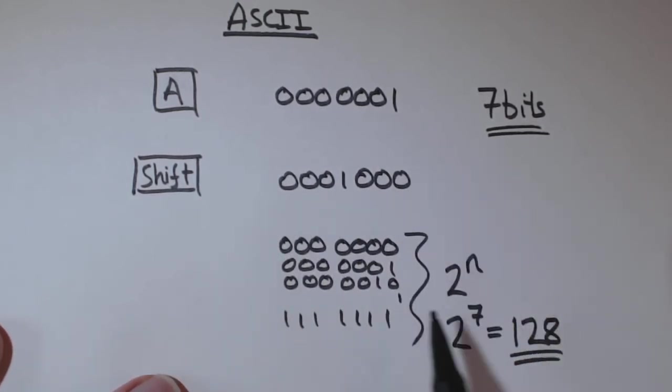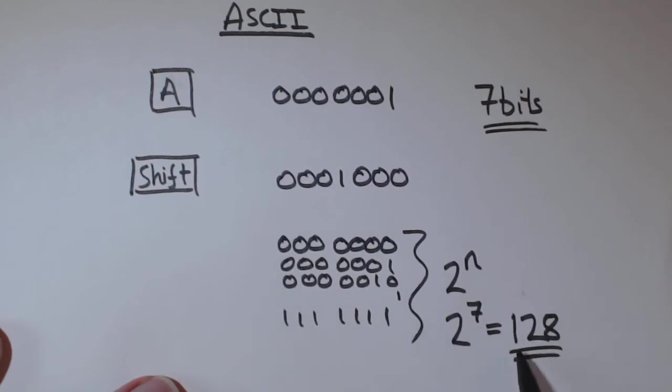So there's actually, using 7 bits, you can get 128 unique binary combinations. And each combination can relate to a character on the keyboard.